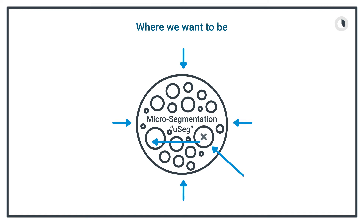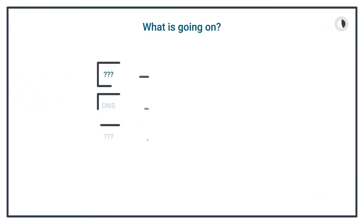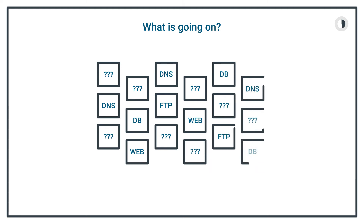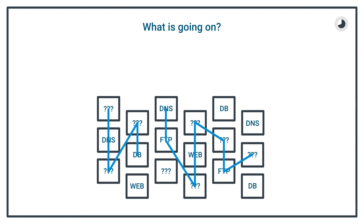The problem is we don't know what's going on. We have no clue how our applications and workloads break down within our environment, how they communicate, and how they talk to get the job done. So we don't have the baseline understanding we require to build the security policy for segmentation.